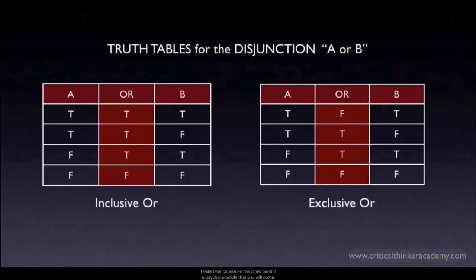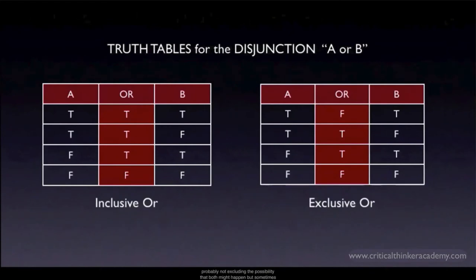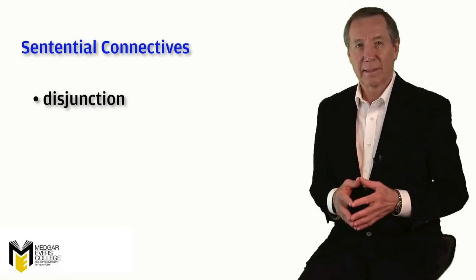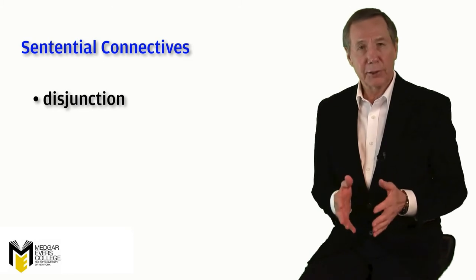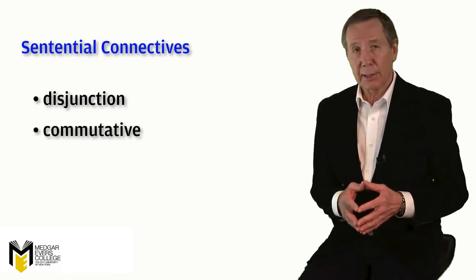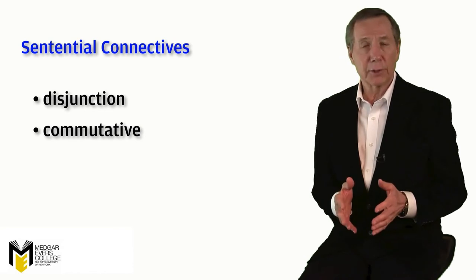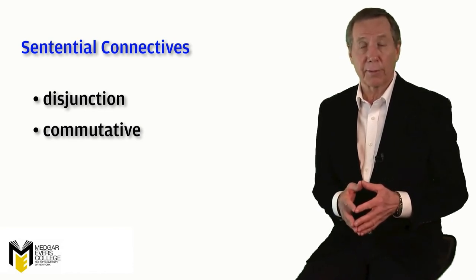On the other hand, if a psychic predicts that you will come into some money or meet a significant new person in the next month, that's probably an inclusive or, since they're probably not excluding the possibility that both might happen. But sometimes it's hard to know whether an 'or' is intended to be inclusive or exclusive, and in those cases you might need to ask for clarification if an argument turns on how you read the 'or.' As with conjunction, disjunction is also commutative — in sentential logic you may reverse the order of the disjuncts without affecting the truth value of the disjunction.